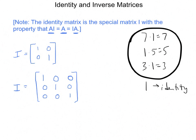There's a 4 by 4 identity matrix, but I'm not going to write it down. You basically just have 1s along the main diagonal, and you have 0s everywhere else.